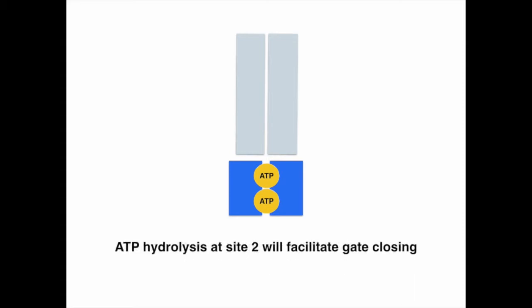ATP hydrolysis at the catalysis competent site or site 2 causes partial separation of two NBDs, which speeds up gate closure.